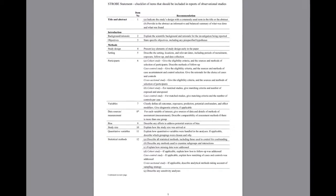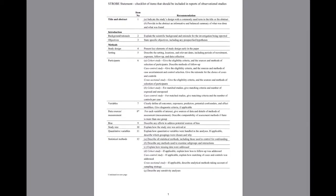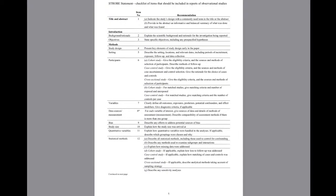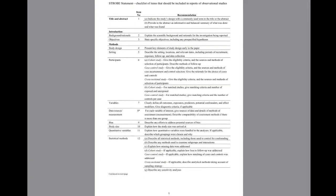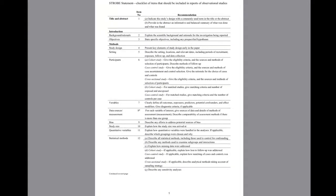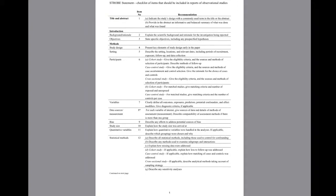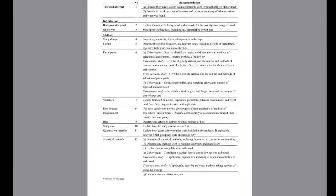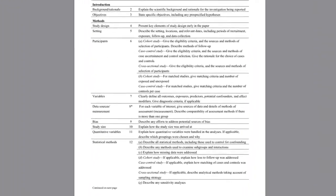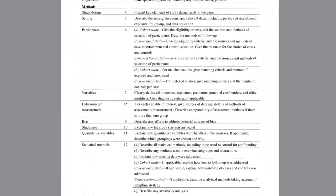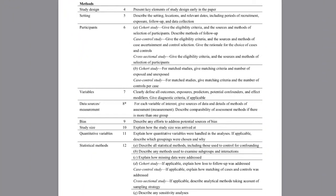This is a preview of the combined checklist for observational studies. The checklist goes through each item to be included under each section of a paper. For example, under the methods section,